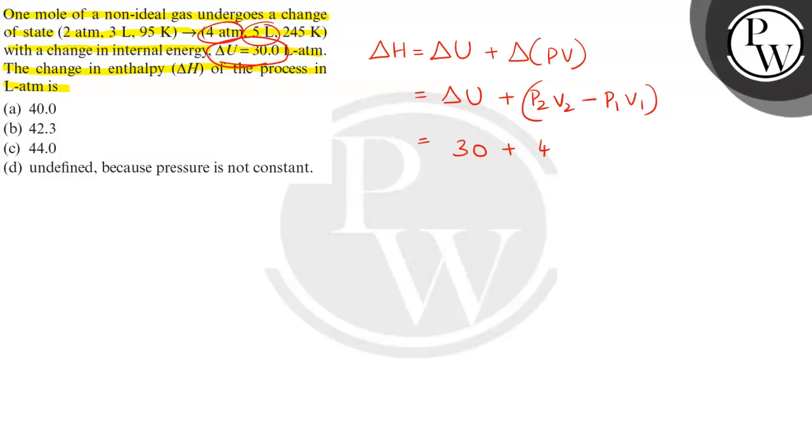This is 4 into 5 minus P₁, which is given as P₁ is 2 and V₁ is 3, so 2 into 3.